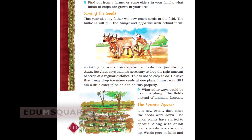Appa says that it is necessary to drop the right amount of seeds at a regular distance. This is not so easy to do. He says that I may drop too many seeds at one place. I must wait till I am a little older to be able to do this properly. The sprouts appear — it is now 20 days since the seeds were sown. The onion plants have started to sprout. Along with onion plants, weeds have also come up.